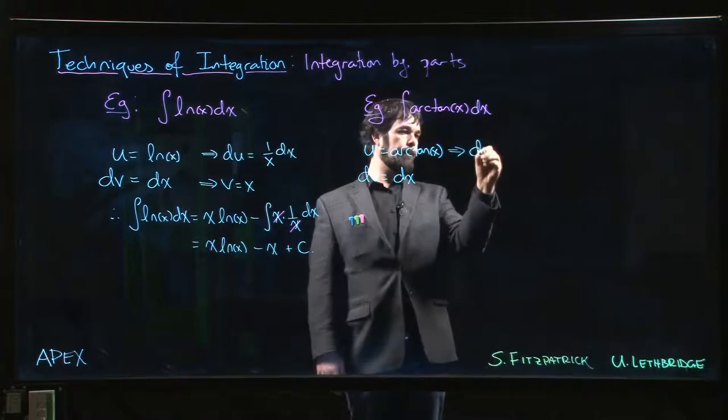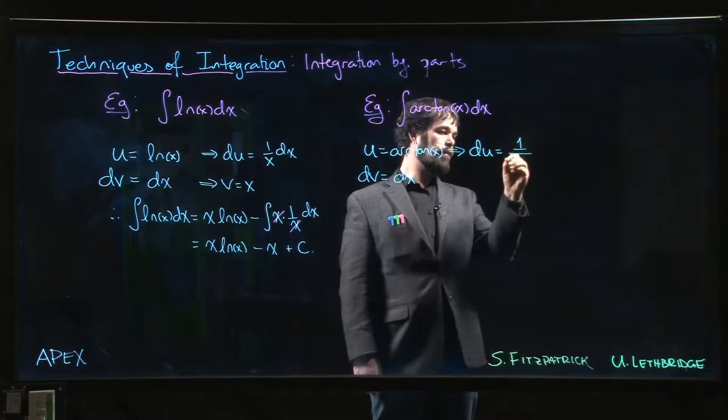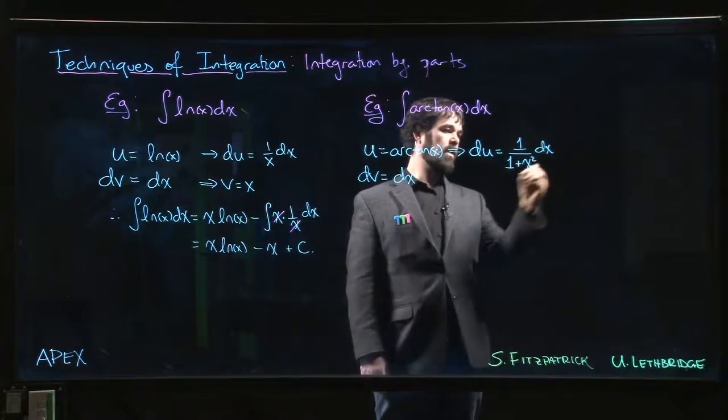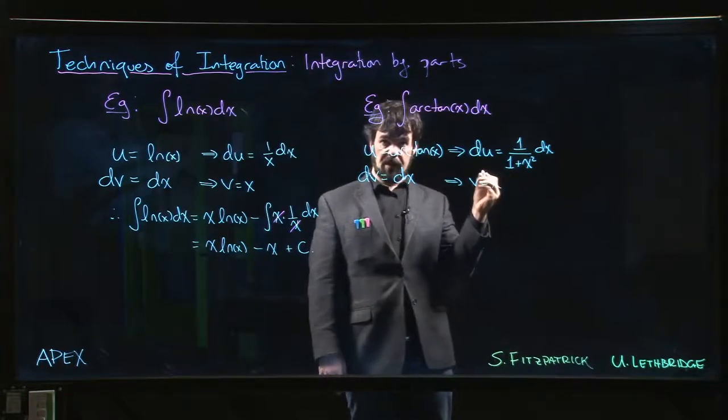Well then du, the derivative of arctan is 1 over 1 plus x squared times dx, and v is just x.